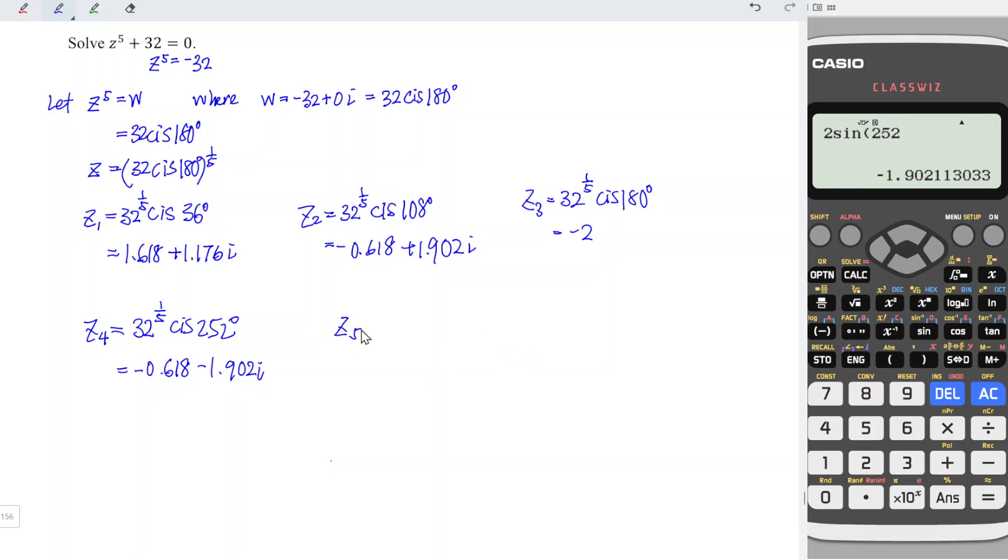Next, for the last root, again, we have 32 to the power of 1 over 5 cis. And this time, we take 252 plus 72, which is equal to 324. And we should now make use of what we have entered previously. So we remove the angle and replace with 324 degrees. We have positive 1.618. And for the imaginary part, just simply remove the cos and replace with sine. So we have negative 1.176i.